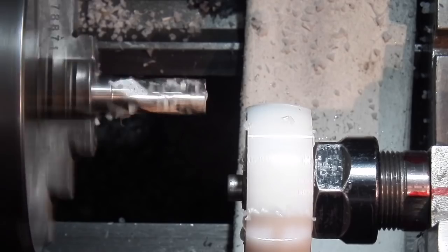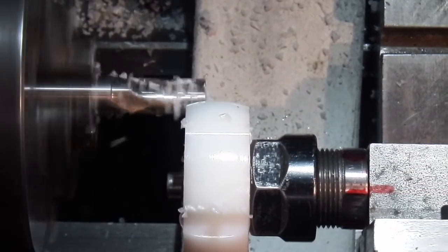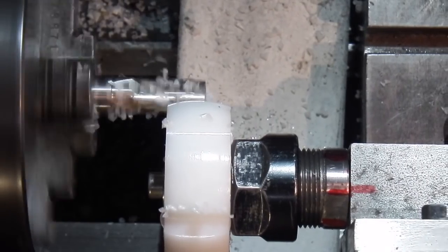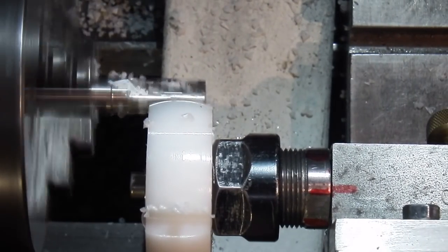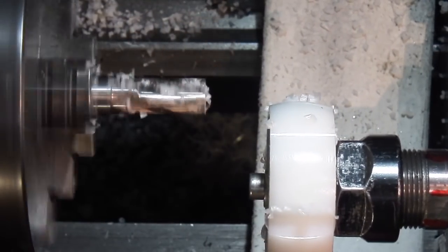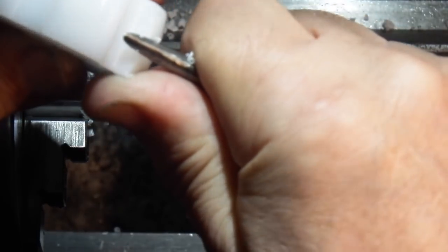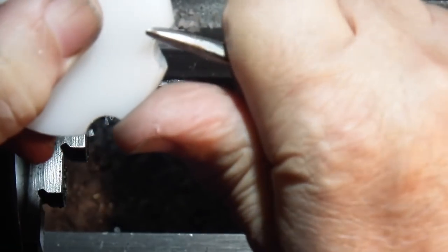Once you've gone round, feed the cutter into the depth you require and complete the second cycle. And then if you have any sharp edges you can remove them with the scraper.